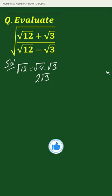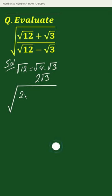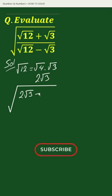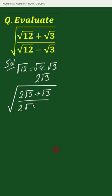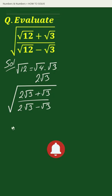Now we can rewrite the expression as the square root of (2√3 + √3) divided by (2√3 - √3).